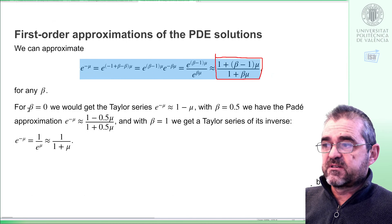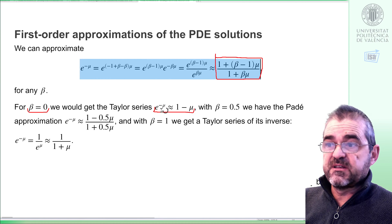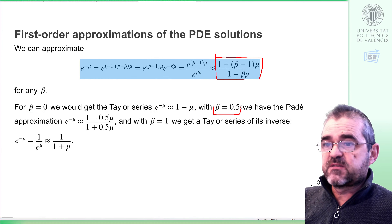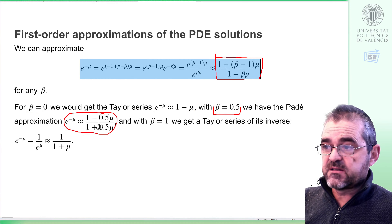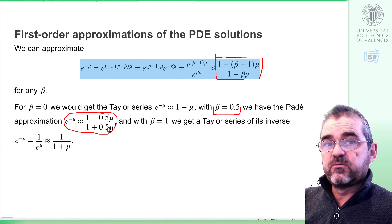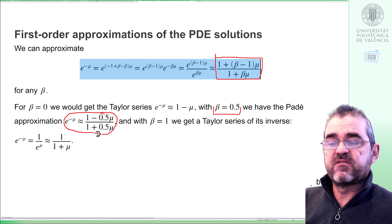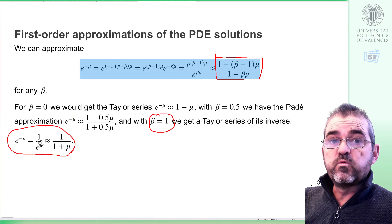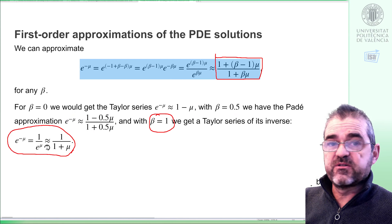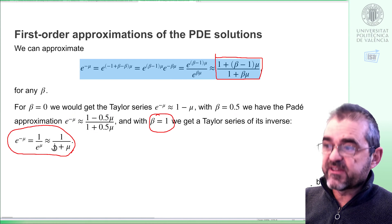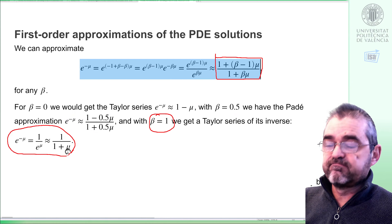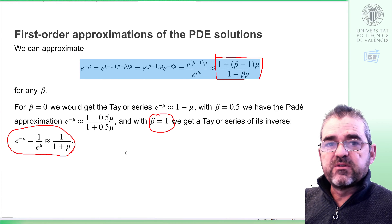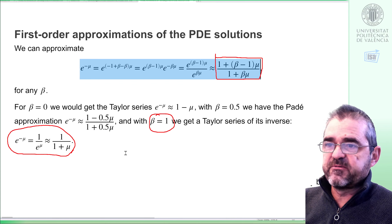For instance, if beta is 0, we get the Taylor series expansion. If beta is 0.5, we get the Padé approximation of the exponential. If beta is 1, we get the inverse of the Taylor series of the inverse. But we can also get other approximations with beta equal to 0.2, 0.8, or whatever we wish.